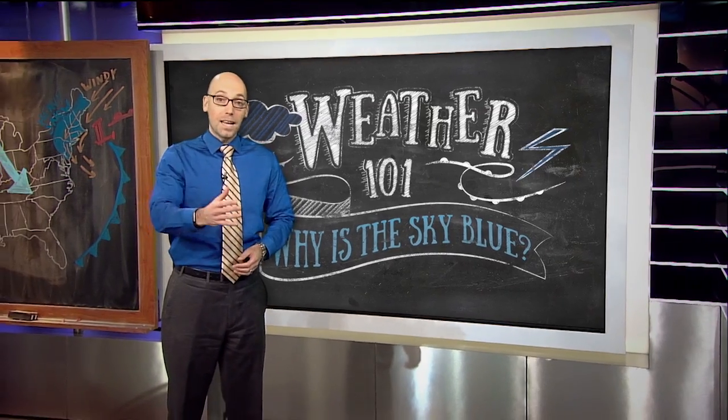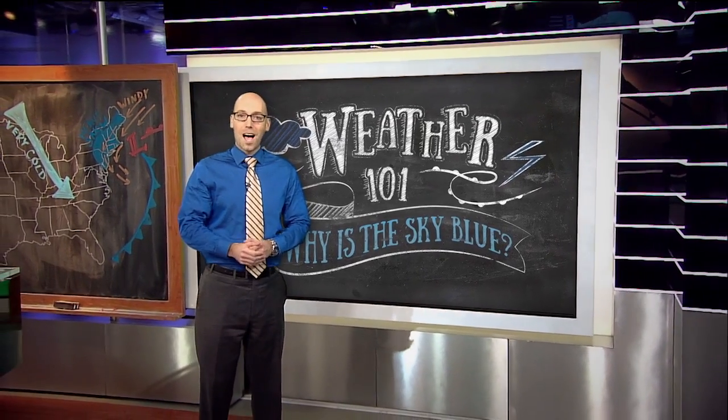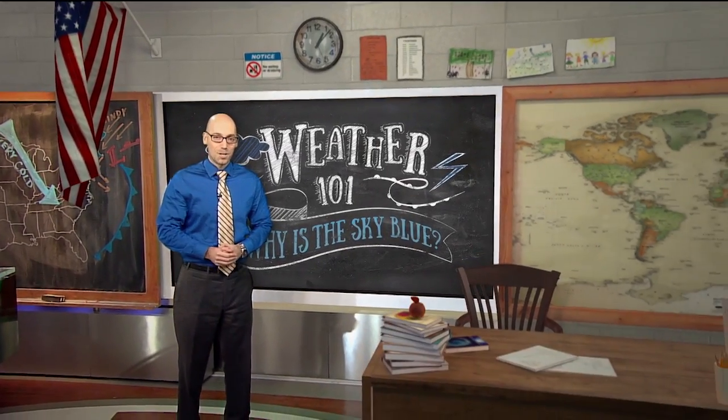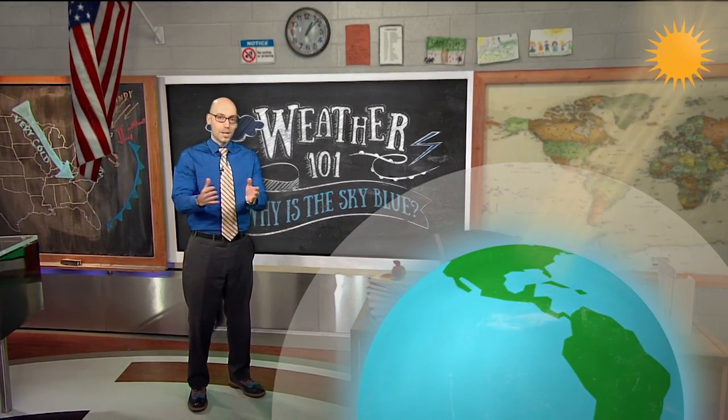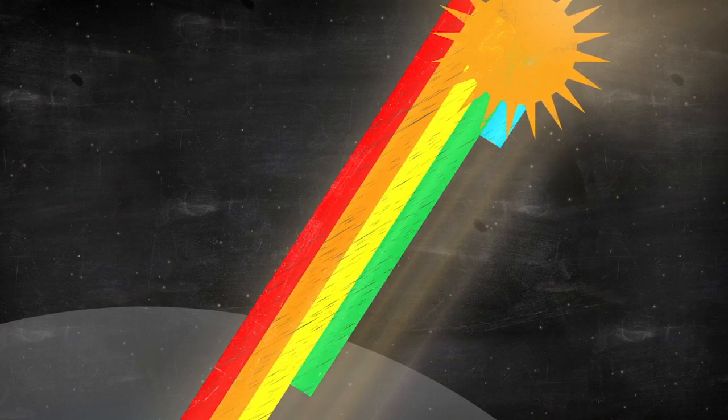It's Weather 101 time. Today's topic is: why is the sky blue? Class is in session. It all comes from the way sunlight interacts with Earth's atmosphere. Sunlight is actually a combination of all the colors of the rainbow, and each